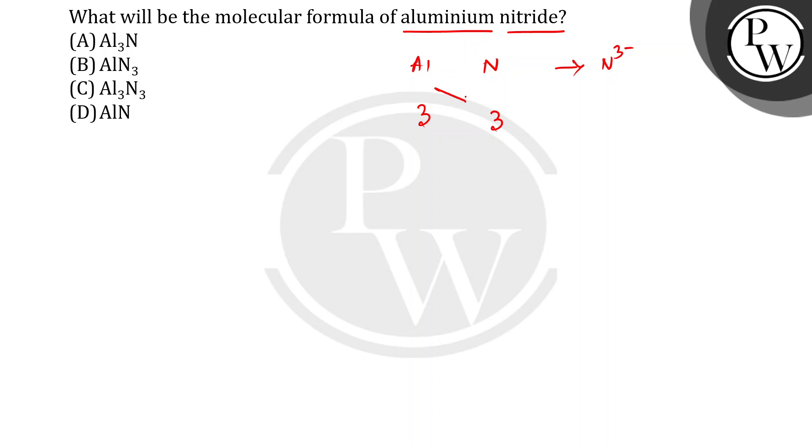Aluminium ka valency hota hai 3. Bas ab criss cross kar do, aur Al3N3 ho raha hai.